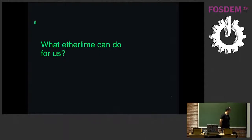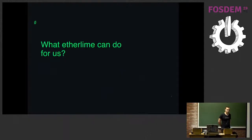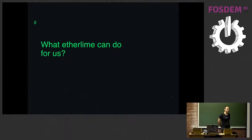EtherLime can run a local blockchain development network for you so you can test all your smart contracts, done again with a single command. This local blockchain development network comes with 10 static accounts that are the same every time you start the network, so you can use them in your projects without changing private keys and addresses. These accounts are loaded with billions of Ethers, which is really useful when making a project for an ICO and you need to test it.